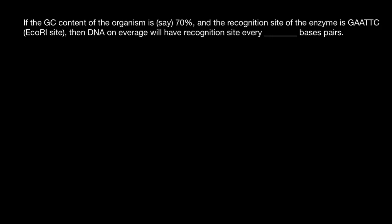Hello, and welcome to Nikolai's Genetics Lessons. Today's question is: if the GC content of an organism is 70%, and the recognition site of the enzyme is the EcoRI site, then on average, how many base pairs apart will the DNA have one recognition site?